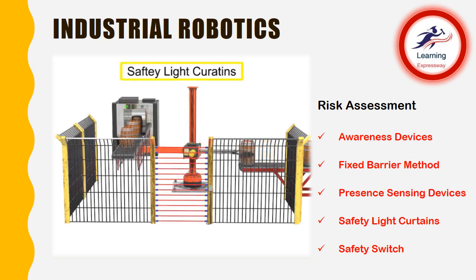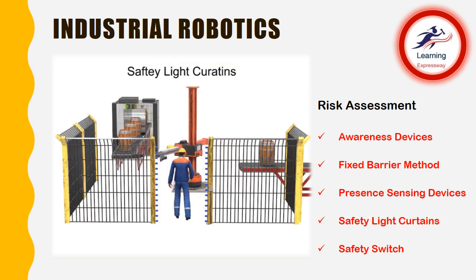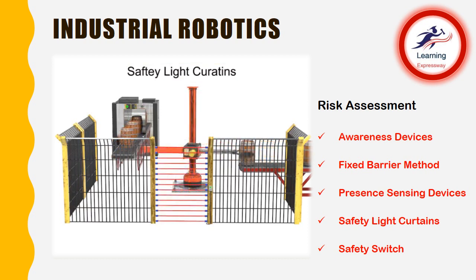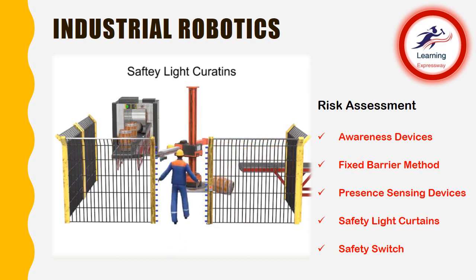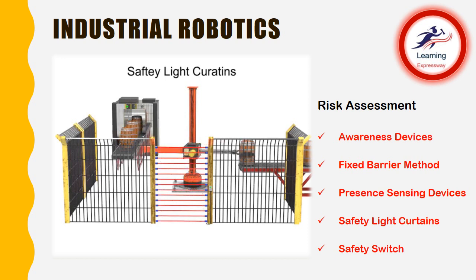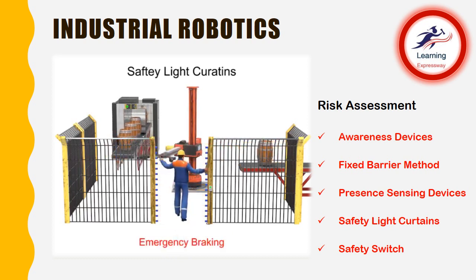Safety light curtains are another type of presence sensing device. When a person enters the work envelope, the light beam is interrupted, which sends a signal to the robot. For certain work scenarios, sudden stops could cause the work to become uncontained, as objects may continue to move even after the robot stops. In these cases, emergency braking of the robot is used in lieu of completely stopping. With emergency braking, the robot slows down work and does not stop suddenly.